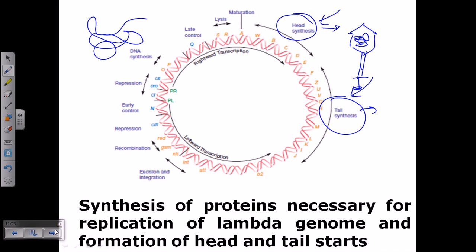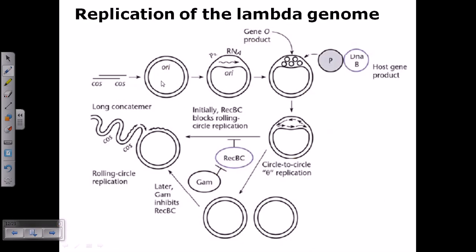The replication of the lambda genome: how is lambda genome replication actually carried out? Usually, replication of the lambda genome can be carried out in two different ways. One is the theta mode of replication.